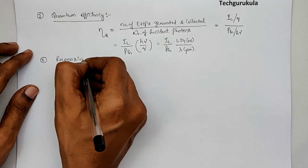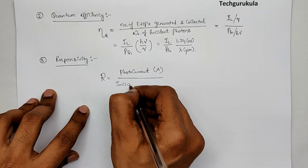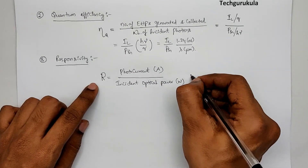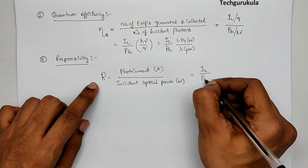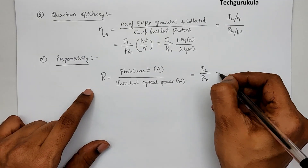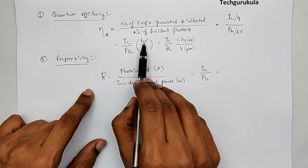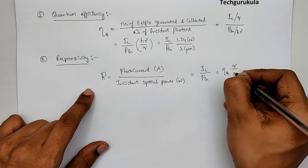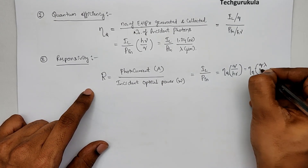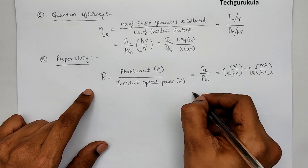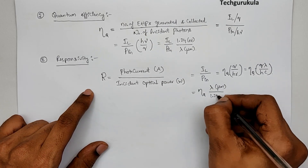The third important parameter is responsivity, defined as the photocurrent I_L divided by the incident optical power P_in in watts. Including quantum efficiency, responsivity can be written as I_L / P_in = η × q / hν, which can be rewritten as η_q × (λ in micrometers) / (1.24 in electron volts).